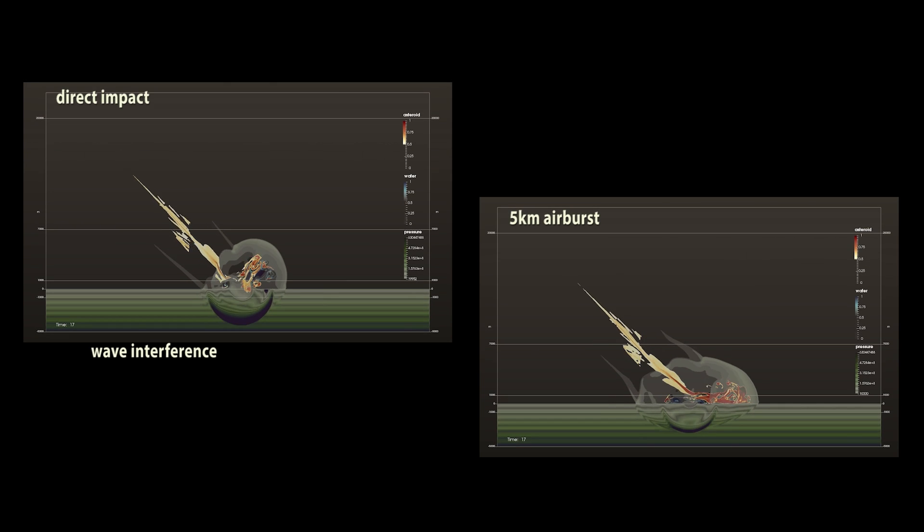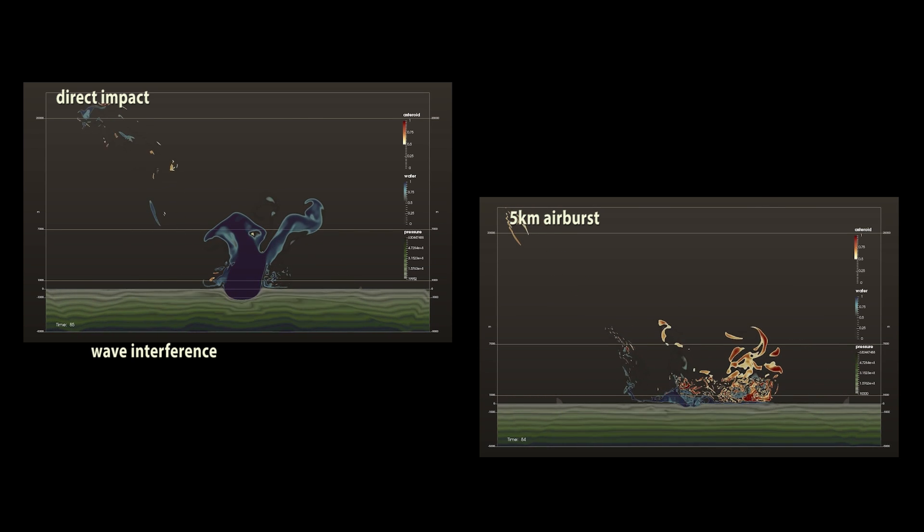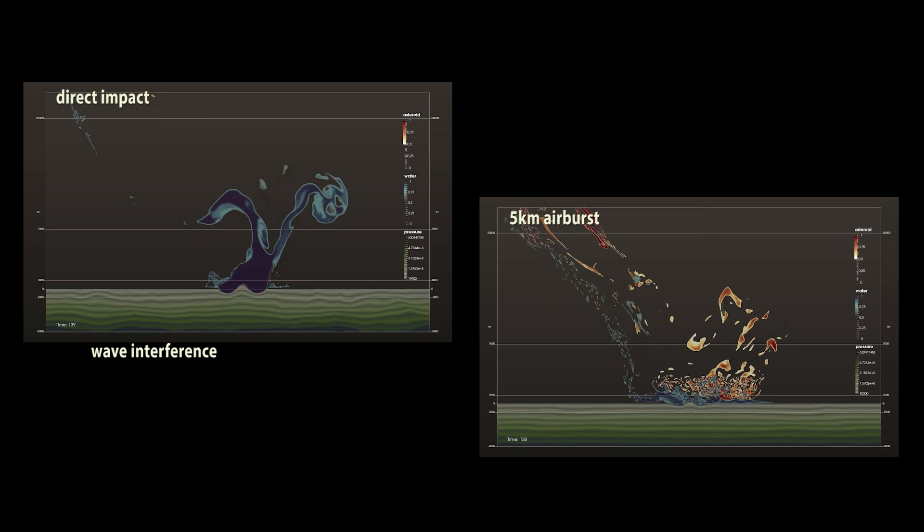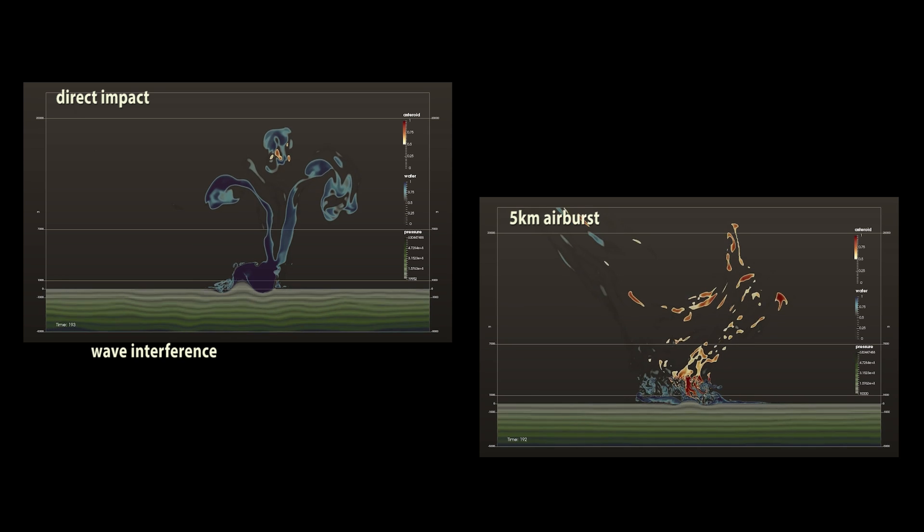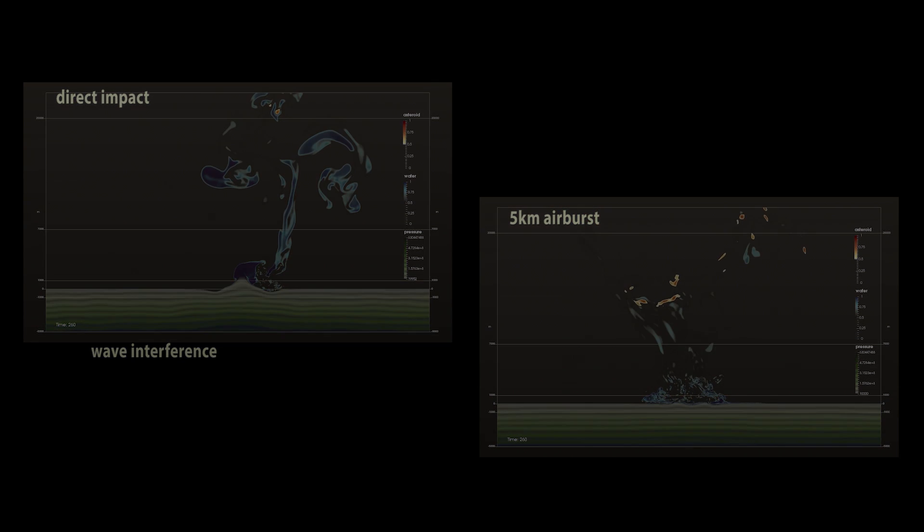Interestingly, there is a stronger wave interference in the direct impact simulation, but such an impact is more likely to create a tsunami because of the greater height of the splash. This may indicate that a tsunami is more likely to be formed during a direct impact than an airburst. Previous simulations had led us to believe that the opposite was true.